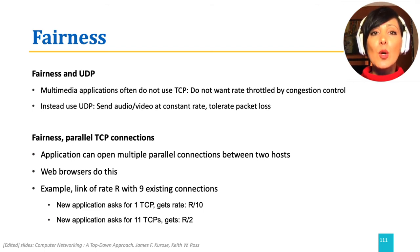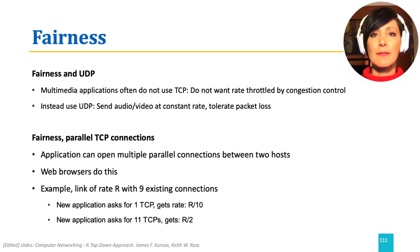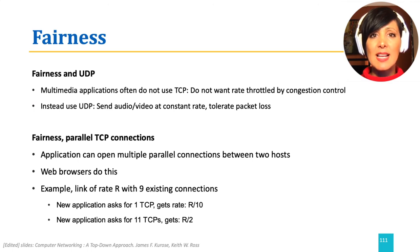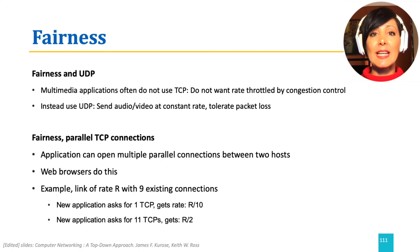For TCP, there are also ways to manipulate fairness to gain more throughput. This could be done with parallel sessions. For example, if we have a link of rate R with nine existing connections, and a new application opens one new TCP connection, it gets the rate R divided by 10, since it is one of 10 connections sharing the bottleneck. However, if this new application asks for 11 TCP connections, it will gain 11 out of 20 total connections over that link, getting it almost half of the bottleneck bandwidth.